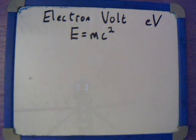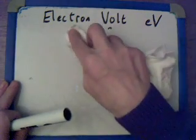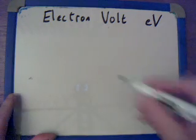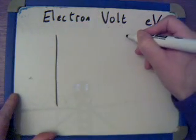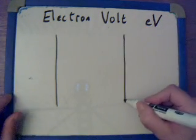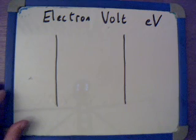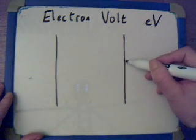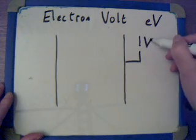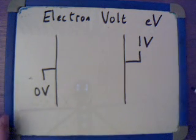The first thing we'll look at is the electron volt. We'll go back to talking about plates — these are charged plates. There's a potential difference between these plates and an electric field between them, as we looked at in the earlier video. I've got these two metal plates here, and we're going to put one volt on one and no volt on the other, so there's a potential difference of one volt.